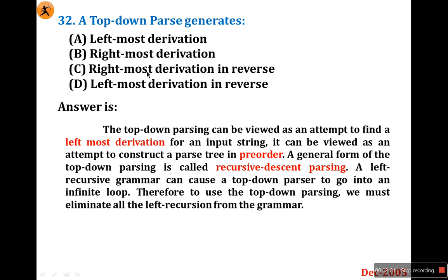Bottom-up parsing uses right derivation. The general form of top-down parsing is called recursive descent parsing. A left-recursive grammar can cause a top-down parser to go into an infinite loop, so we must eliminate left recursion from the grammar. These are important points asked in other question papers as well. So the answer is A.